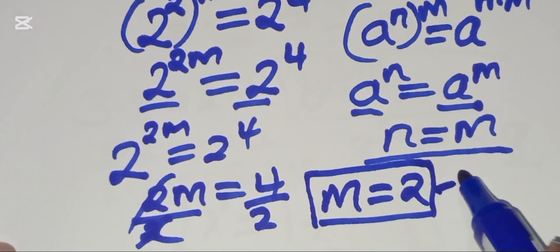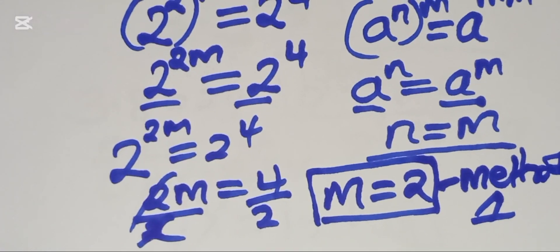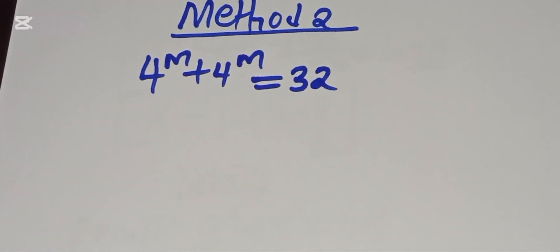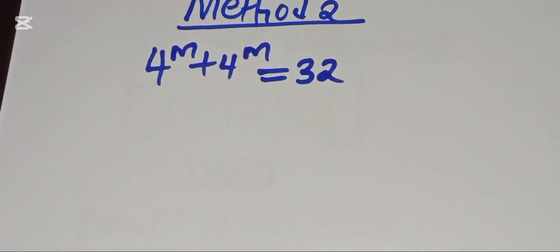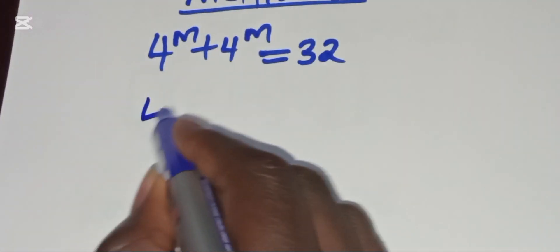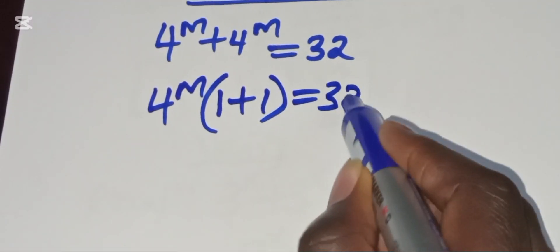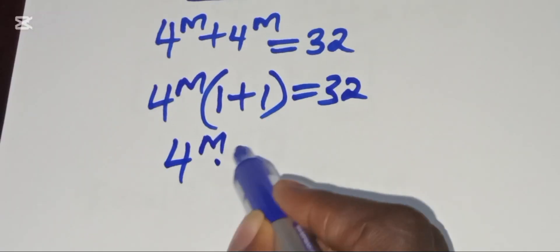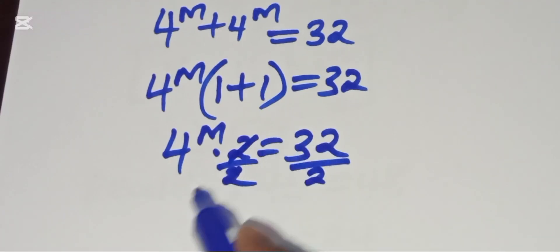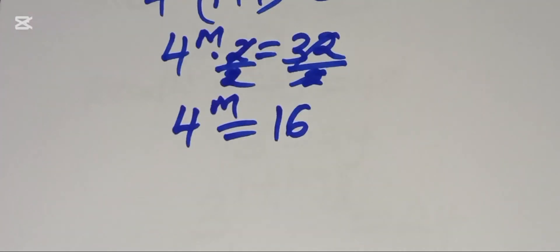Now let me take you through method two. As before, 4^m plus 4^m equals 32, and factoring out 4^m gives 4^m multiplied by 2 equals 32. Dividing both sides by 2, we again have 4 raised to the power m equals 16. To solve for m using this method, we introduce the natural logarithm.